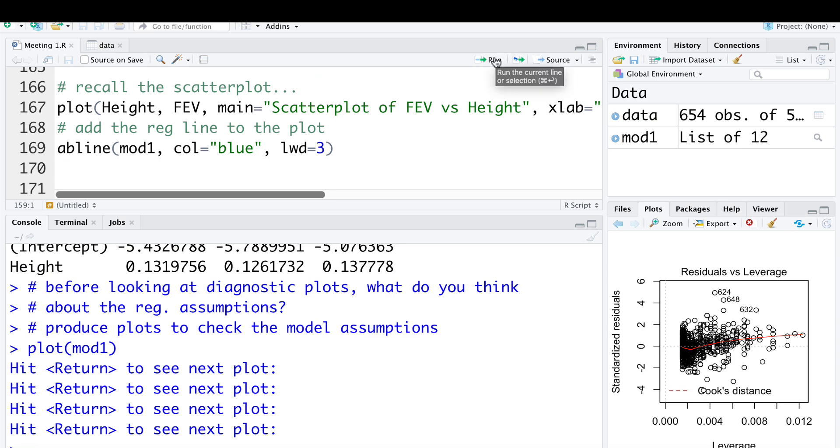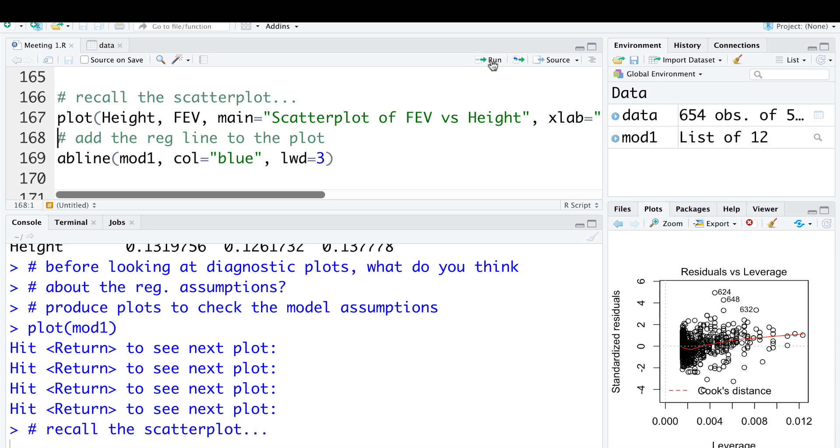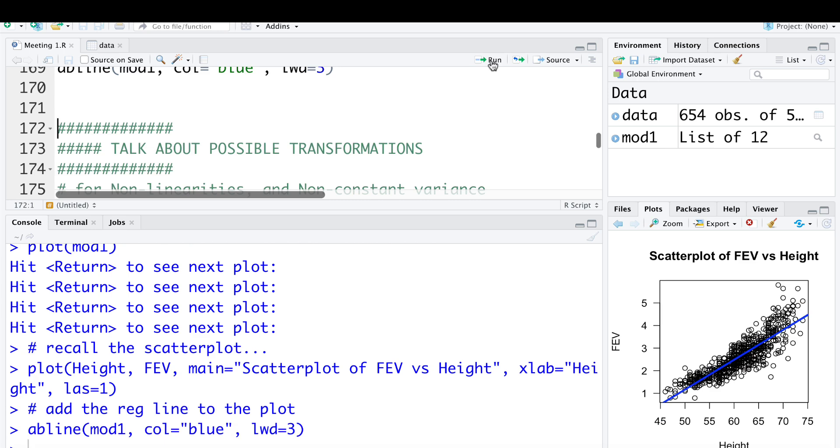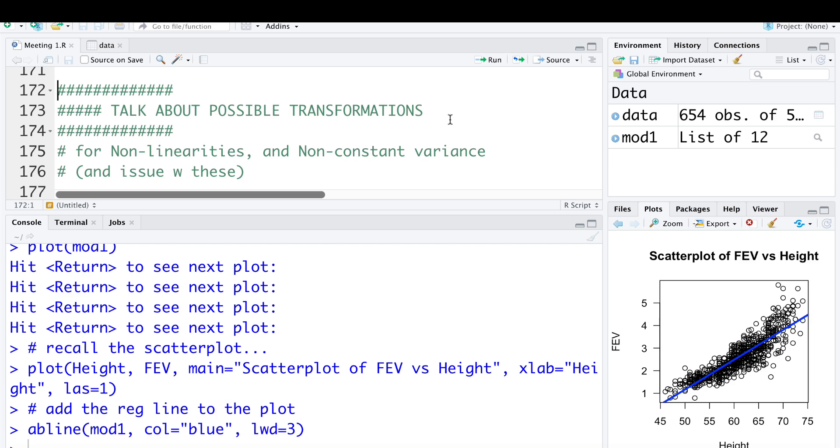So let's just take a look at the scatter plot of our data again. Here is the plot, and let's add in the regression that we fit. Now we're going to take a break and go back to a video of me talking about different violations of the regression assumptions and possible solutions we have to address those violations. In particular, ways of addressing non-linearity as well as ways of addressing increasing or non-constant variance. So we'll talk a bit about that, and then we'll come back to implementing some of those in R.